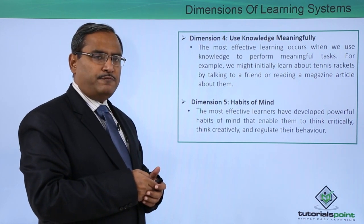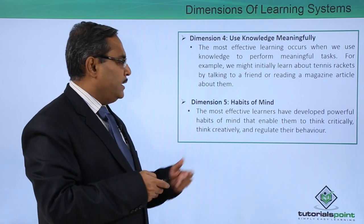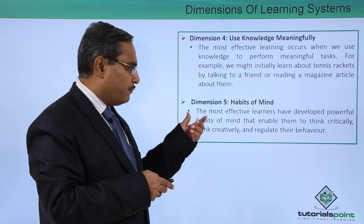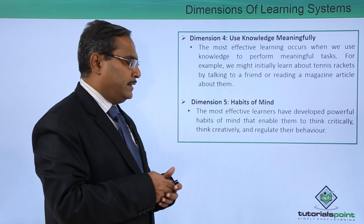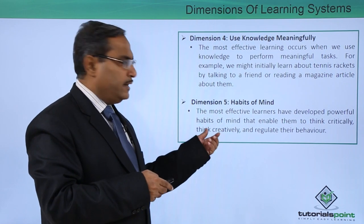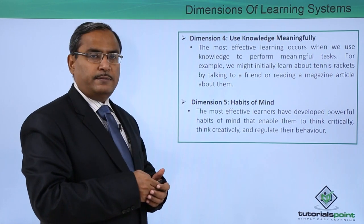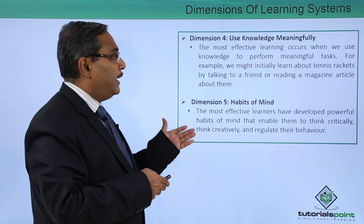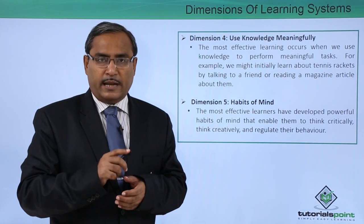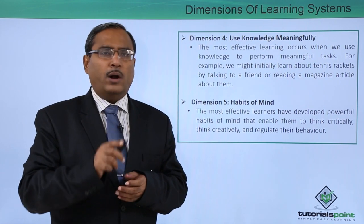Dimension number five — the last dimension — is habits of mind. The most effective learners have developed powerful habits of mind that enable them to think critically, think creatively, and regulate their behavior. In this way, we have defined the five different dimensions of learning and discussed each one of them. Thanks for watching this video.